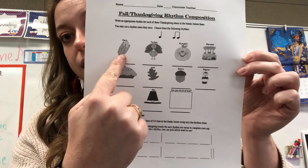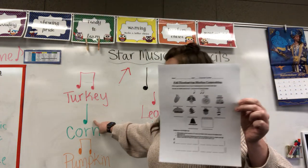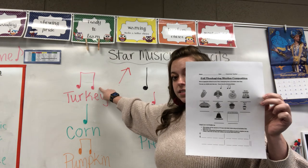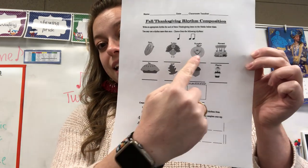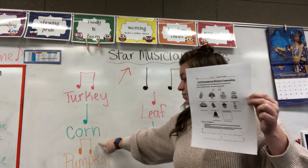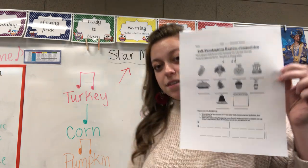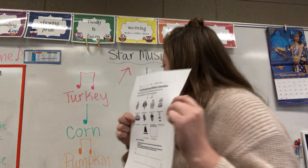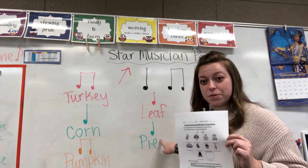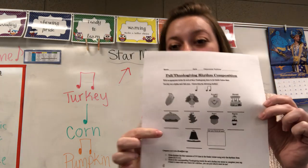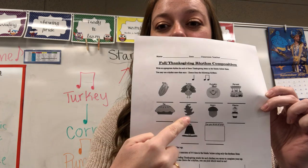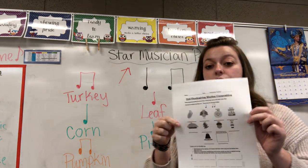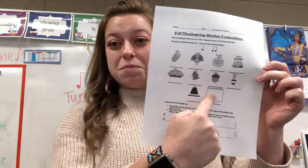So look right here — we did corn together, so you would write your quarter note underneath the word corn. We did turkey together, so you would write your eighth notes under the word turkey. We did pumpkin — what note did we put with it? The eighth note, because it has two sounds. We did pie — one syllable, so quarter note. We did leaf — one sound, Ta, so quarter note. Then you would finish the ones we did not do together, and make up your own.